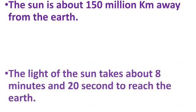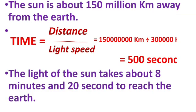To find the time, we divide distance by speed. Here we are talking about the time taken by the light of the sun to reach the earth, so we will divide the distance — the distance between the sun and earth.